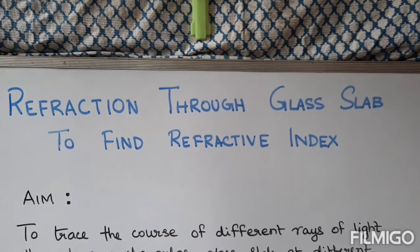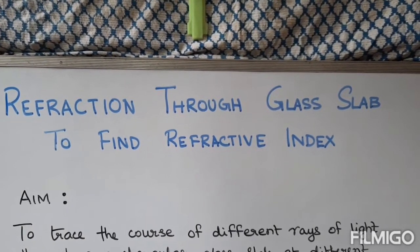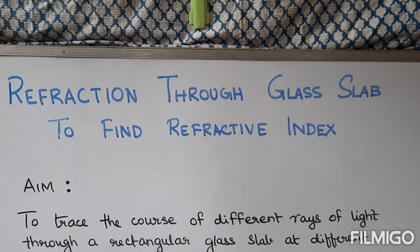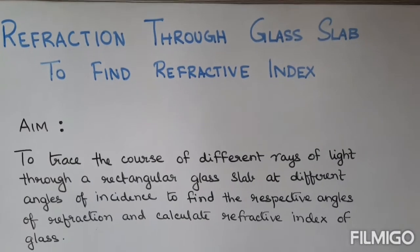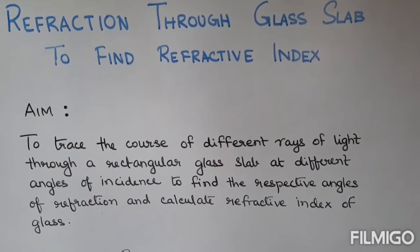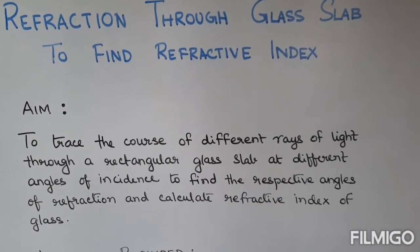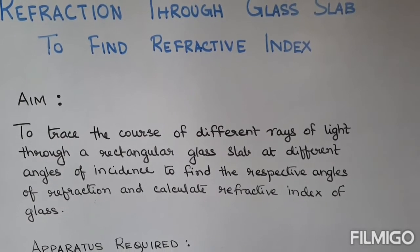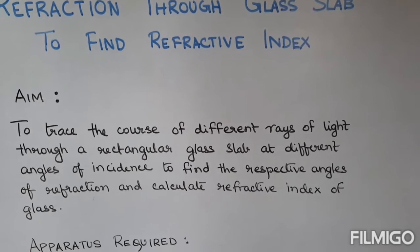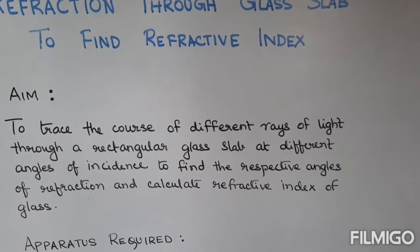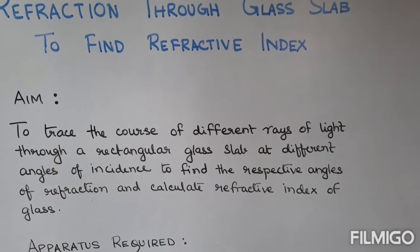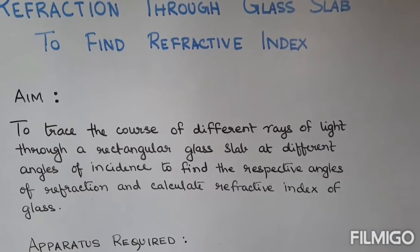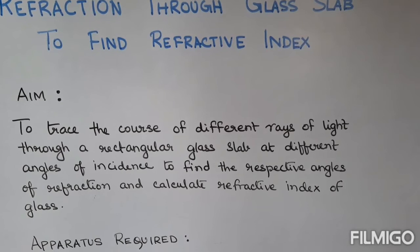Experiment refraction through glass slab to find refractive index. We are going to trace different rays of light through a rectangular glass slab. We will take different angles of incidence and for that we will get different angles of refraction. Then we will take sin I by sin R and calculate the refractive index.